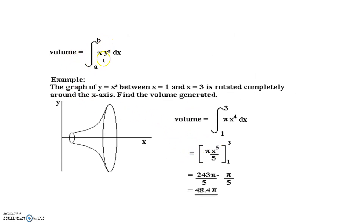Example: the graph of y equals x squared, between x equals 1 and x equals 3, is rotated completely around the x-axis. Find the volume generated. V equals pi times integral from 1 to 3 of x raised to 4 dx, because (x squared) squared equals x raised to 4. Integration of x raised to 4 is x raised to 5 upon 5, from lower limit 1 to upper limit 3. Substituting: 3 raised to 5 upon 5 minus 1 raised to 5 upon 5, giving pi upon 5 times (243 minus 1) equals 242 upon 5 times pi. Final answer: 48.4 pi cubic units.